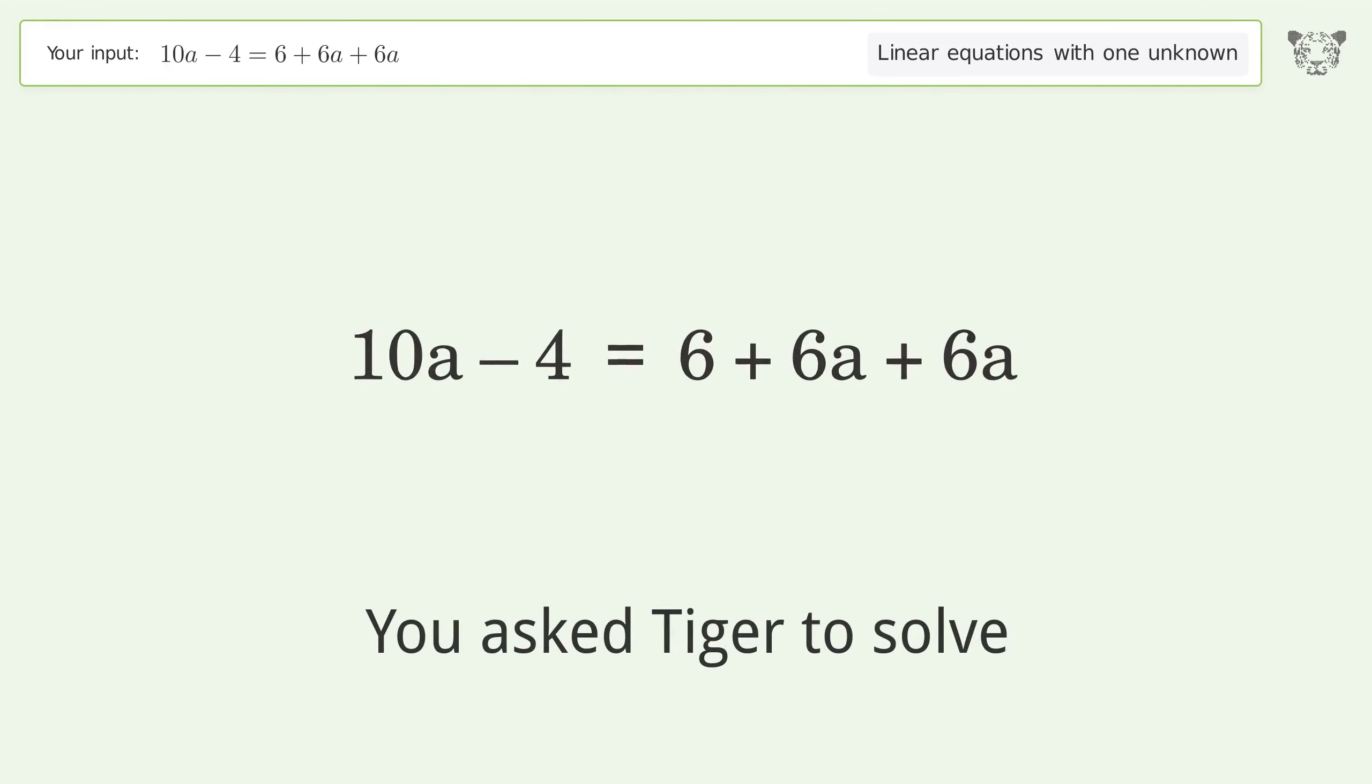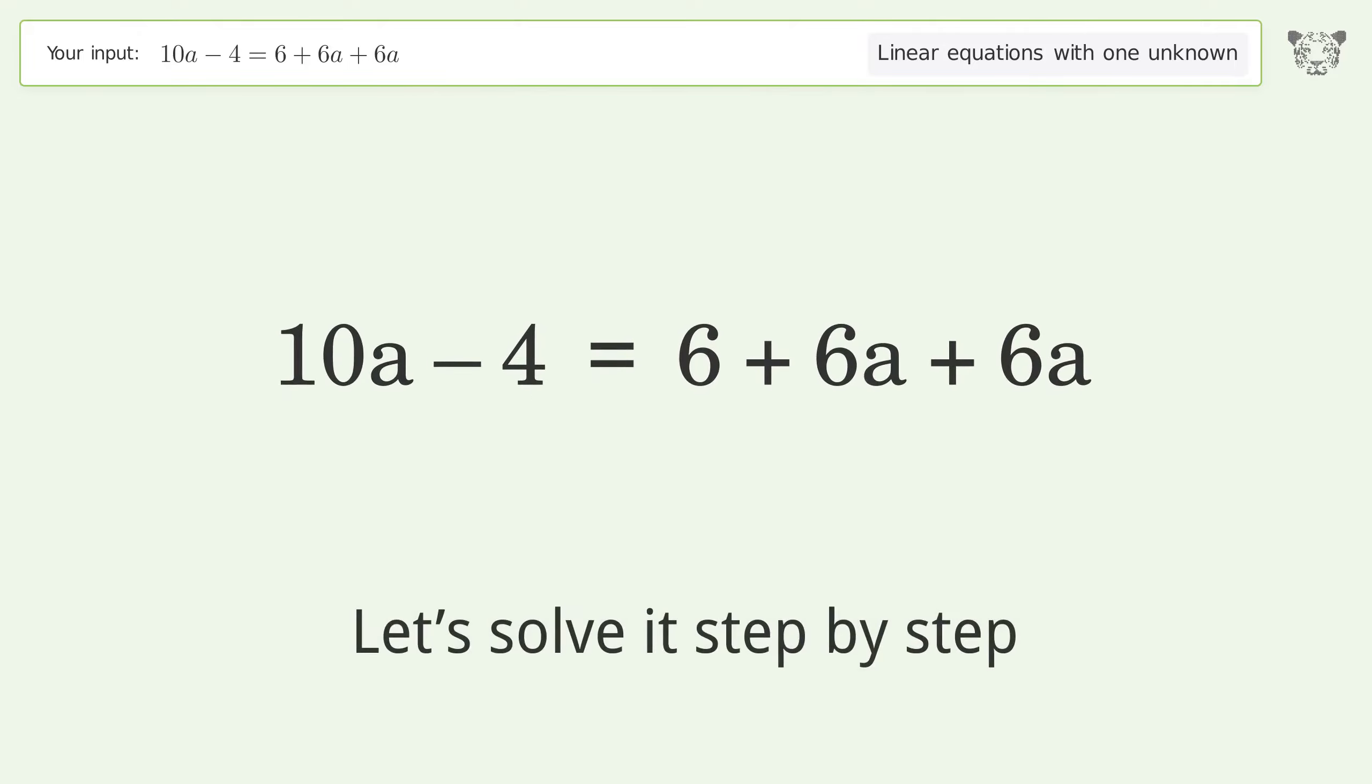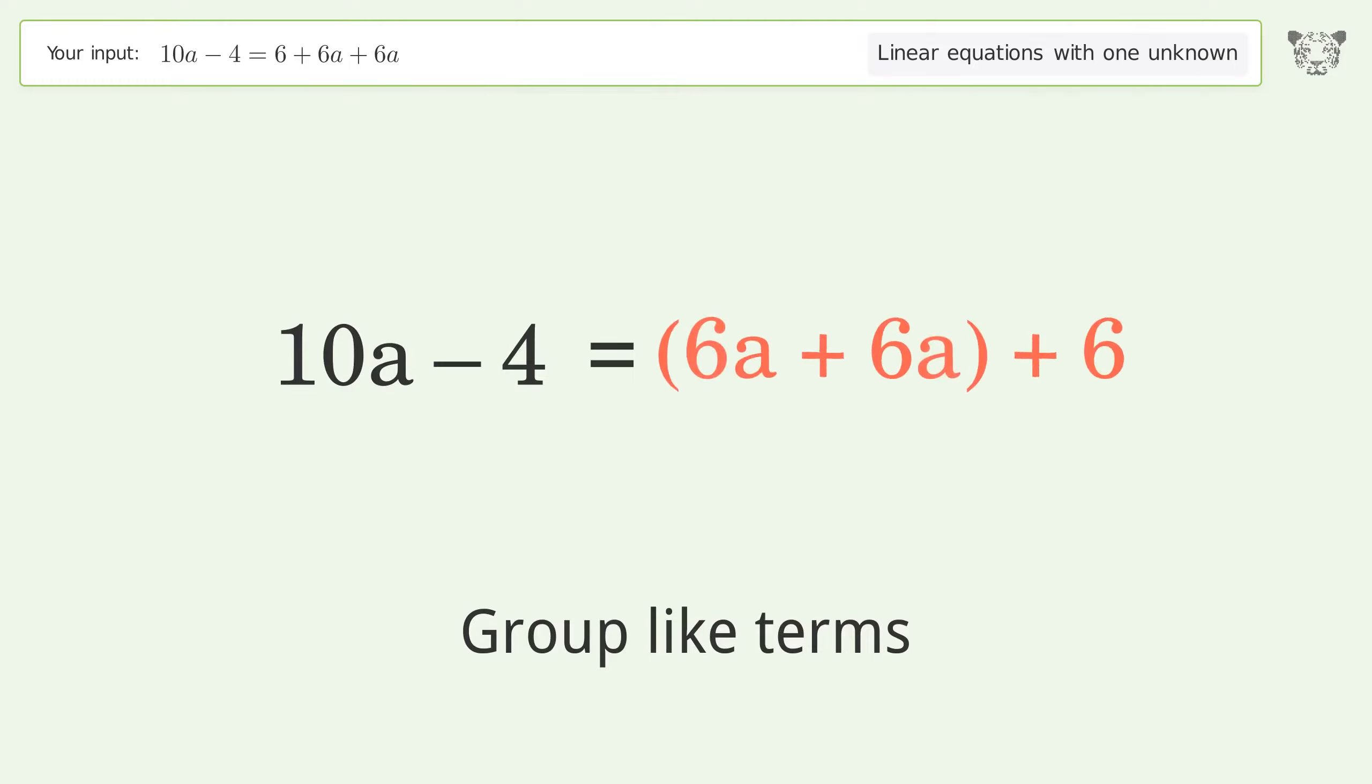You asked Tiger to solve this. It deals with linear equations with one unknown. The final result is a equals negative 5. Let's solve it step by step. Simplify the expression, group like terms, and simplify the arithmetic.